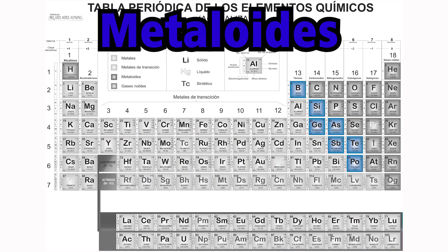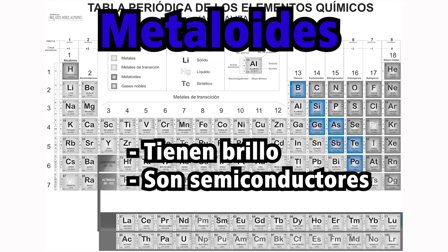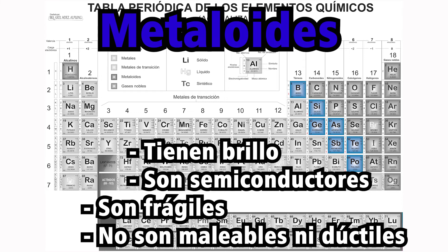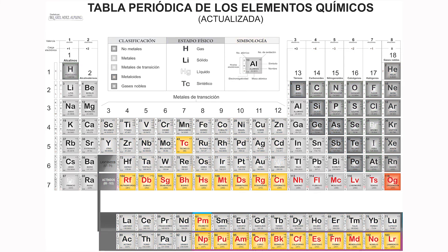Pasemos ahora a los metaloides. Si se fijan, están ubicados justo entre los metales y los no metales. Esto es porque los metaloides poseen propiedades características tanto de los metales como de los no metales. Por ejemplo, tienen brillo y conducen la electricidad, aunque en un solo sentido. Por eso se consideran como semiconductores, pero a la vez son frágiles y por lo tanto no son maleables ni dúctiles. Los elementos cuyo símbolo está en letras rojas son sintéticos, quiere decir que no se encuentran en la naturaleza, más bien fueron creados en un laboratorio.